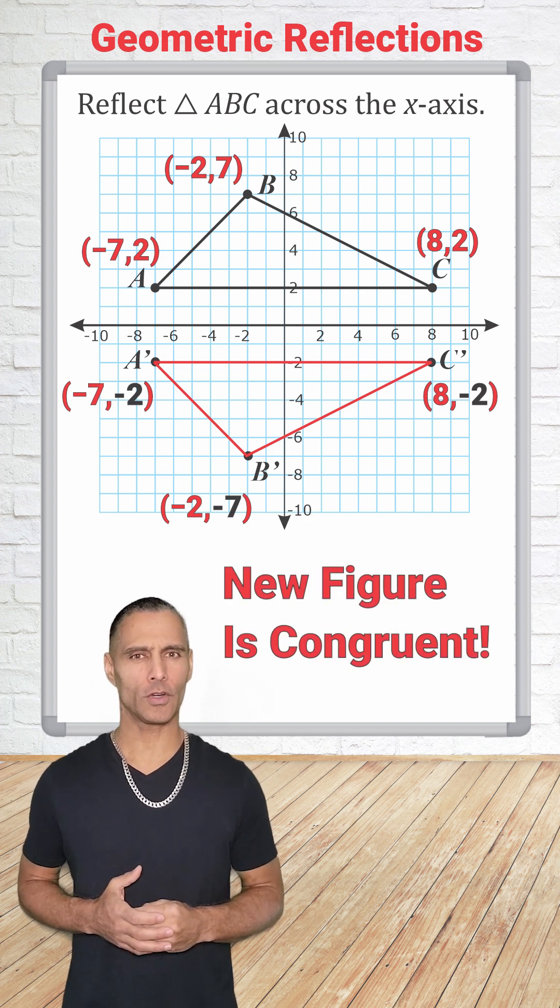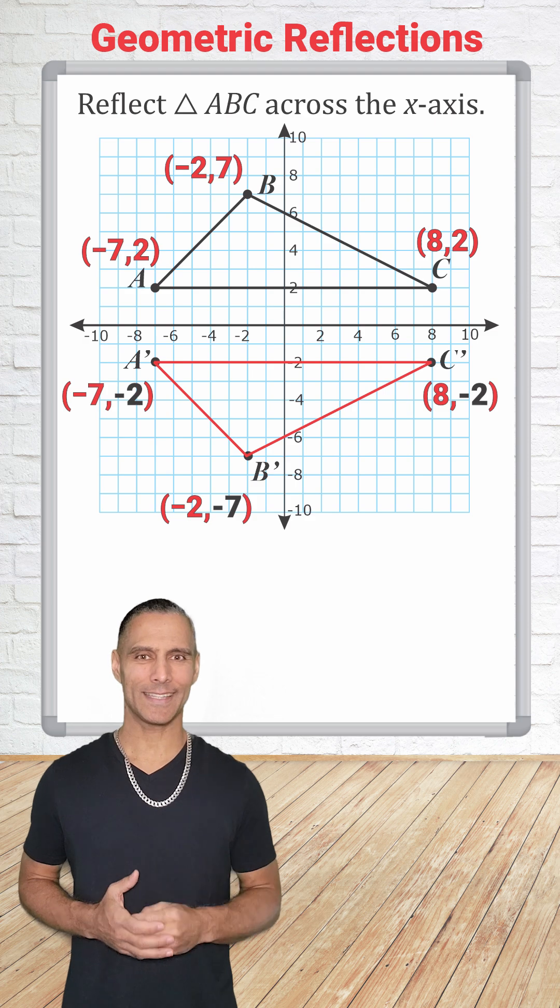If you perform a reflection and your figure is not congruent to the original, that's a sign that a mistake was made in plotting the new coordinates.